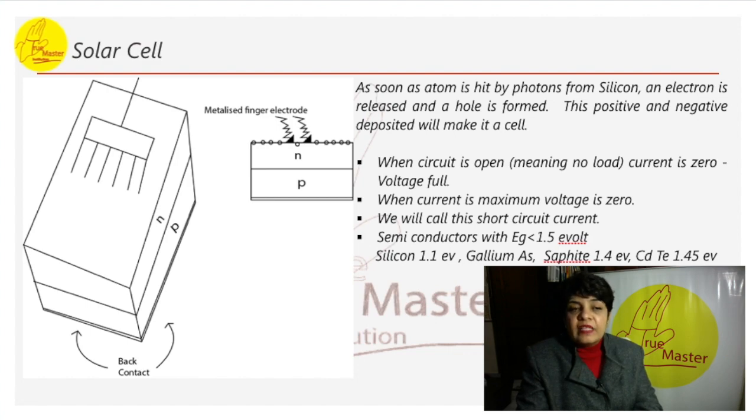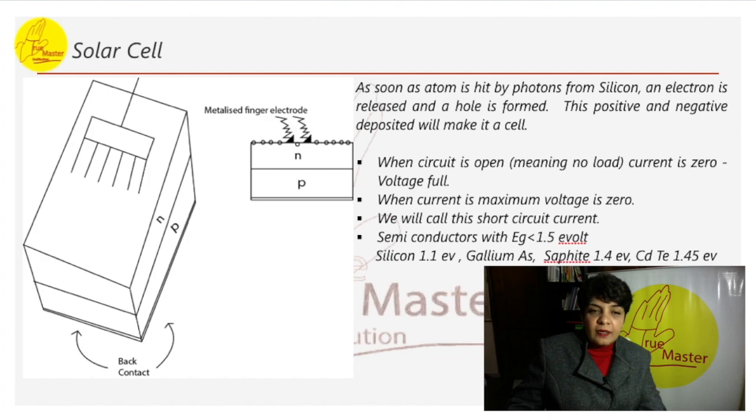We will put a metal whose work function energy is less. When the circuit is open, current is zero, voltage is full. When current is maximum, voltage is zero. So we will call this short circuit current. Semiconductors with the EG energy level, less than 1.5 E volt, like silicon 1.1, gallium and sapphite 1.4. So these all can be used to make the solar cell.